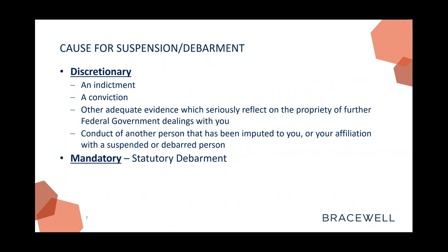Let's talk about causes for suspension and debarment: indictments, convictions, and other adequate evidence — which is a pretty broad category. If you are convicted of a particular crime, that establishes a basis for debarment; they don't need to prove the underlying facts — the conviction itself is sufficient. For suspension purposes, if a company is indicted, the agency is not going to need to show the underlying facts. Simply having the fact of the indictment — the probable cause showing — is sufficient to justify suspension of an entity. There's also a catch-all provision: commission of any offense indicating a lack of business integrity or business honesty that seriously and directly affects the present responsibility of a government contractor or subcontractor.